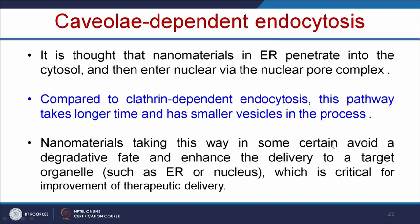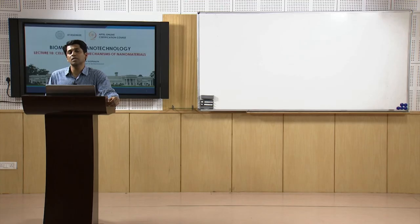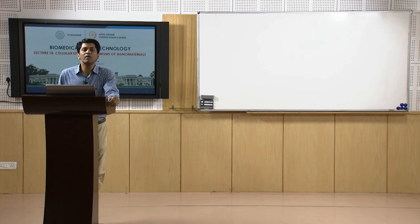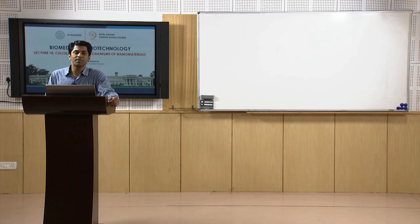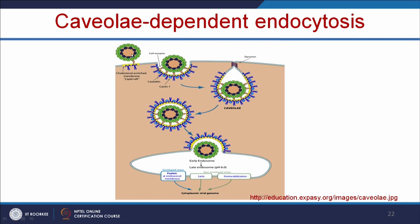The nanomaterials in the endoplasmic reticulum penetrate into the cytosol and then enter the nucleus through the nucleopore complex. Compared to clathrin-dependent endocytosis, this pathway takes longer and has smaller vesicles. Nanomaterials taking this way avoid the degradative fate and enhance delivery to target organelles such as the endoplasmic reticulum or nucleus, which is very important for improving therapeutic delivery. For example, if a nanoparticle for delivering an anticancer drug takes the caveolae-dependent endocytosis pathway, it can escape lysosomes and reach the cytoplasm or nucleus to increase therapeutic efficiency.